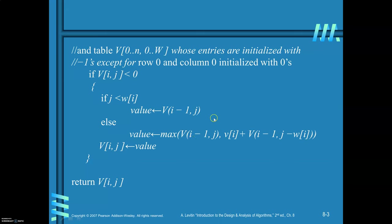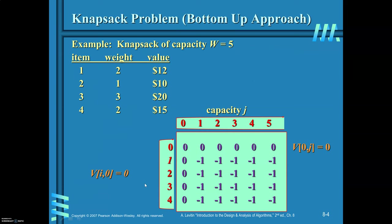Without accommodating the ith item means V[i-1][j]. If you accommodate the ith item into the sack, then you find V_i plus V[i-1][j - W_i]. The maximum of these two values is assigned to 'value', and finally V[i][j] is set equal to that value. The function returns V[i][j].